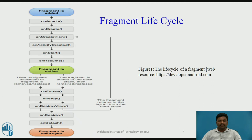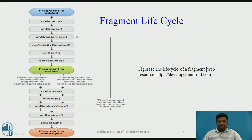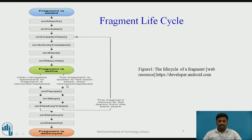This is the Fragment Life Cycle diagram. As we have seen for Activity, similarly Fragment has a Life Cycle. It starts from OnAttach, then OnCreate, OnCreateView, OnActivityCreated, and continues moving downward. We also have OnPause, OnStop, OnDestroy — these are all methods inside the Fragment Life Cycle that we can write individually when creating a Fragment and use as required.